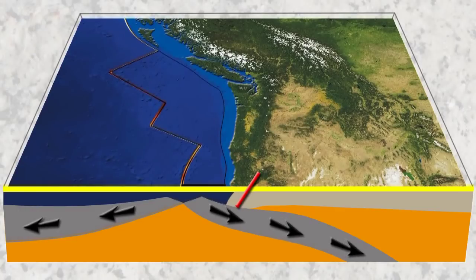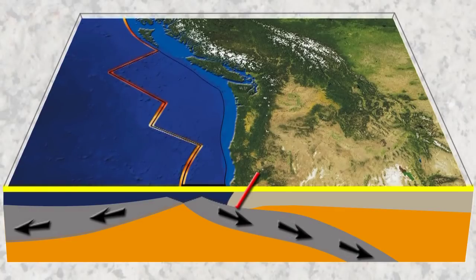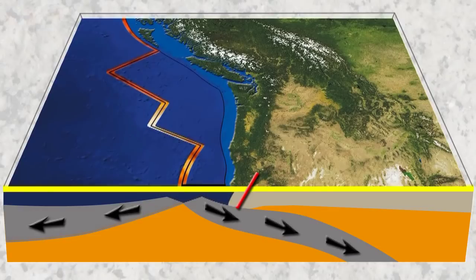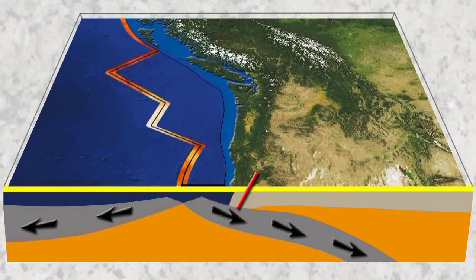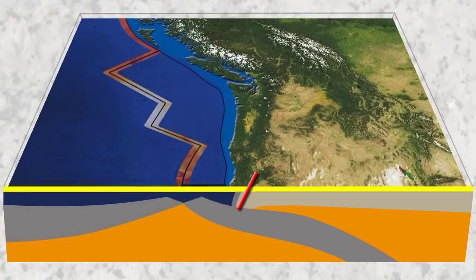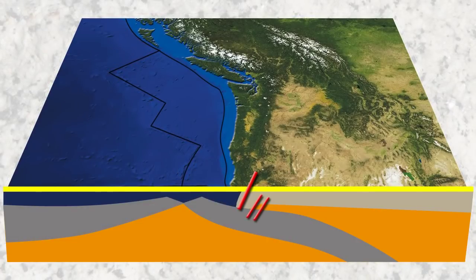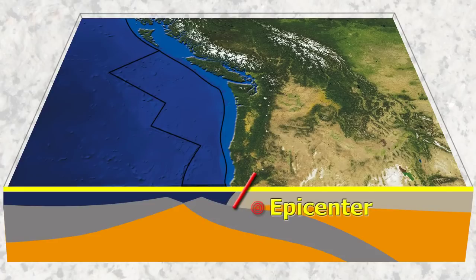Here we have the Juan de Fuca plate being subducted under the North American plate. As it subducts under the North American plate, it causes the lip of the North American plate to get pulled back. The motion continues until the two plates get stuck. Pressures build up until the plates slip — this is the earthquake. The lip of the North American plate will flip back up as the pressure is released, and it is this flipping back up of the plate that pushes the water above it up, causing a tsunami.